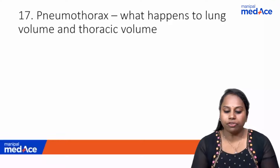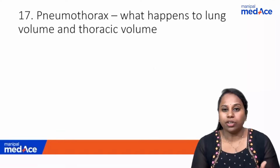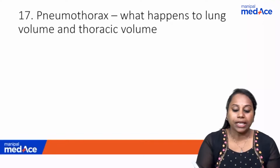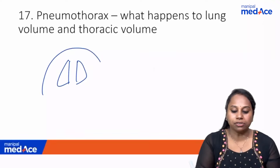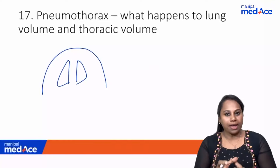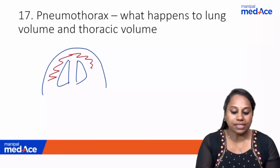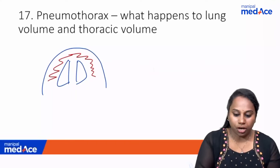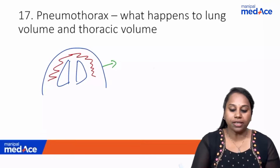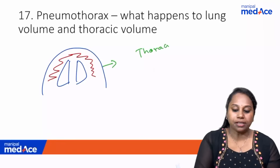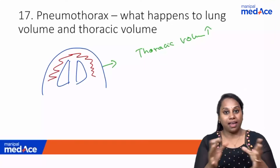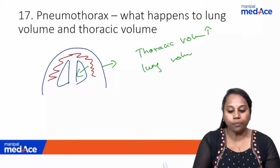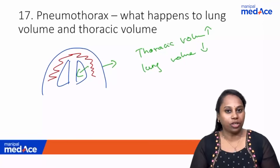Question 17: Pneumothorax — what happens to lung volume and thoracic volume? In pneumothorax, air accumulates in the thoracic cavity, pushing the chest wall outward so thoracic volume increases. This air also pushes the lung inward, causing the lung to collapse, so lung volume decreases. Thoracic volume increases and lung volume decreases.